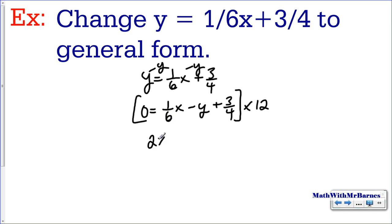So I have 2x. Negative y times 12 is minus 12y. And then 3 over 4 times 12, that's 3 times 12, 36, divided by 4 is 9. You can also think of it as 12 divided by 4 is 3 times 3 is 9. And then that equals 0. There it is, my general form. This guy is positive and a whole number, and these are integers.